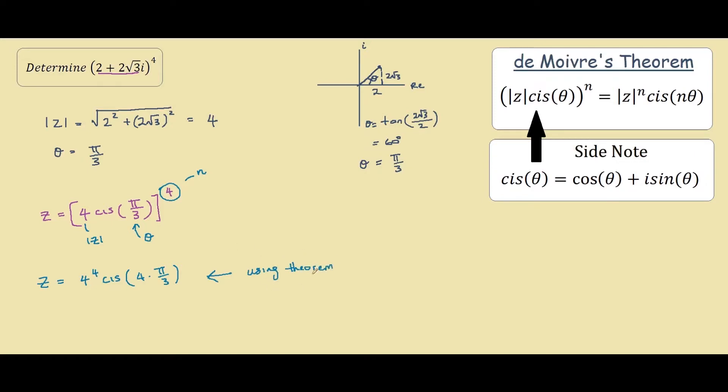As you can see, it's quite straightforward. The only difficult and long part is changing from Cartesian to polar form usually. So simplifying down our solution a bit more, we get z equals 4 to the power of 4, which is 256, cis 4 pi on 3.